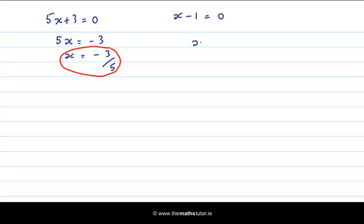If x minus 1 is 0, then x is equal to 1. And we have found the other solution. So again, our solution is x is equal to minus 3 over 5 and x is equal to 1.